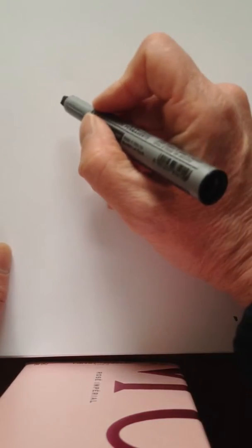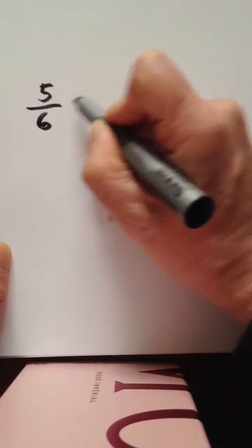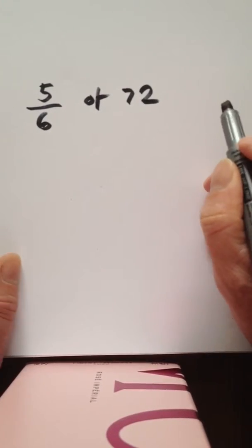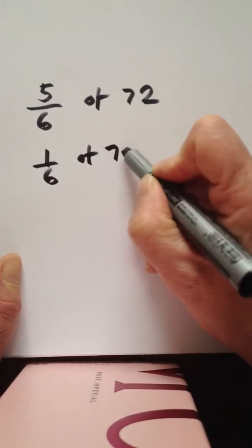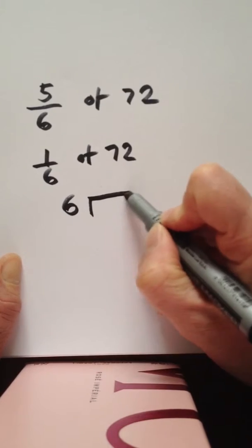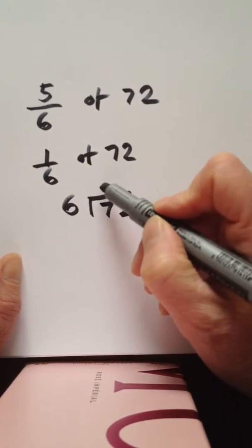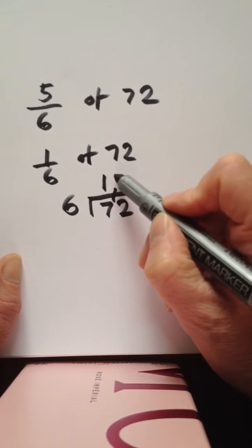Let's do five sixths of 72. To find one sixth of 72, we'll do six into 72. Six into seven goes once with a remainder of one, six into twelve goes two.